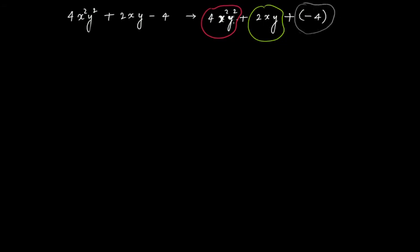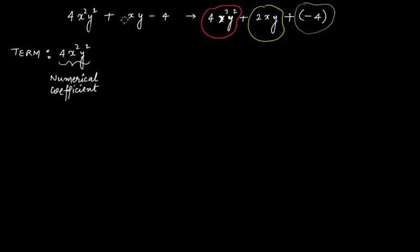All three terms add up to make this algebraic expression. Now if you take the term 4x²y² and have to tell its coefficient, that means you have to tell the numerical coefficient. The numerical coefficient of 4x²y² is the number 4. So 4 is the numerical coefficient, or simply the coefficient, of this term.